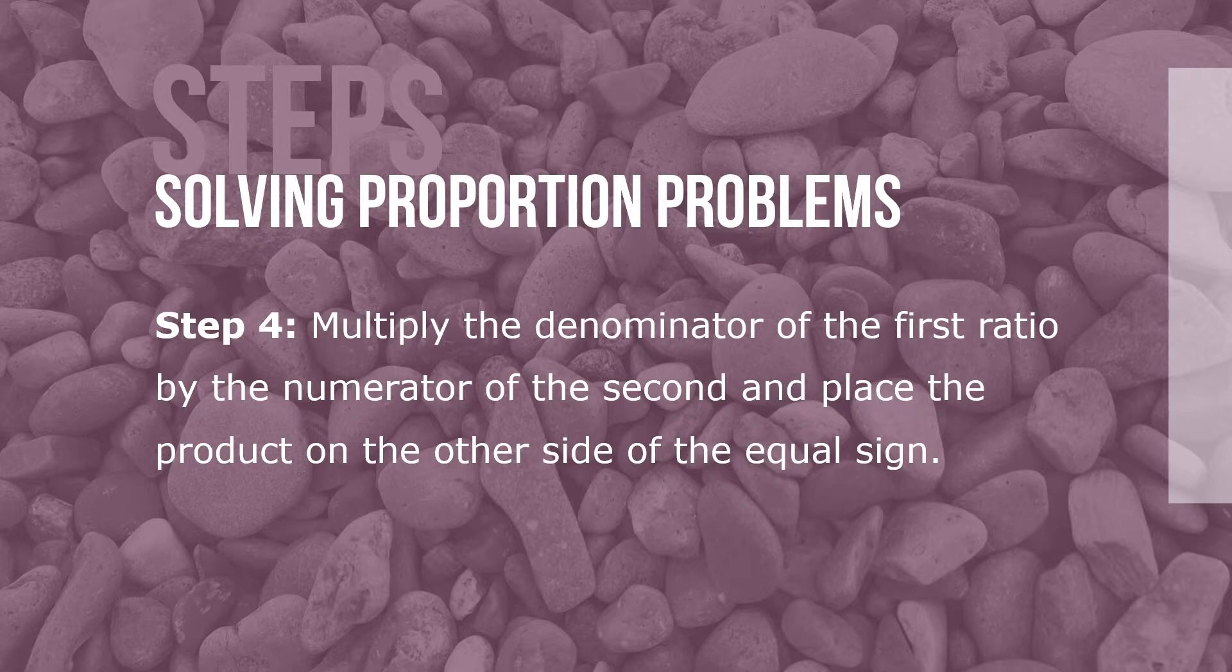Step 4: Multiply the denominator of the first ratio by the numerator of the second and place the product on the other side of the equal sign. Step 3 and step 4 taken together are also called cross multiplication.